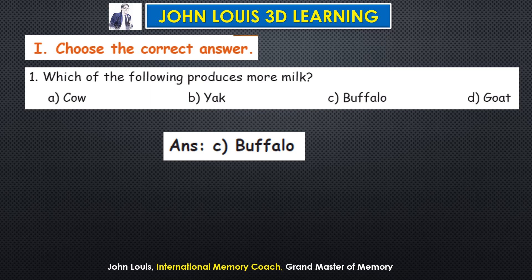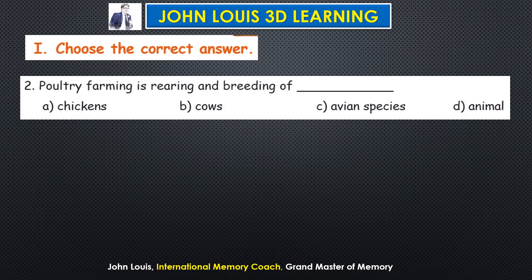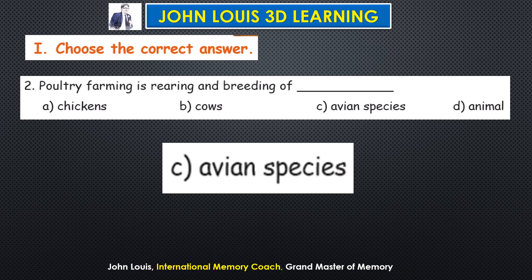Second question: poultry farming is the rearing and breeding of dash. Options are A — chickens, B — cows, C — avian species, D — animals. Chickens are one type of bird. The correct answer is C — avian species.